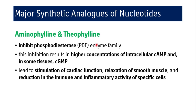Aminophylline and theophylline inhibit the phosphodiesterase enzyme family. This inhibition results in higher concentrations of intracellular cyclic AMP and, in some tissues, cyclic GMP as well. Higher levels of cyclic AMP and cyclic GMP lead to stimulation of cardiac function, relaxation of smooth muscles, and reduction in immune and inflammatory activity of specific cells.